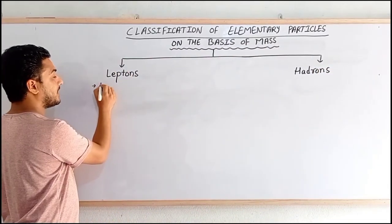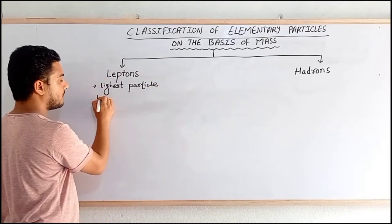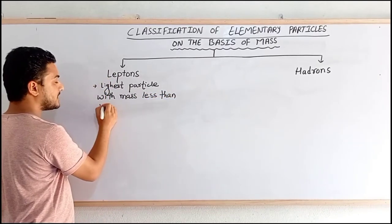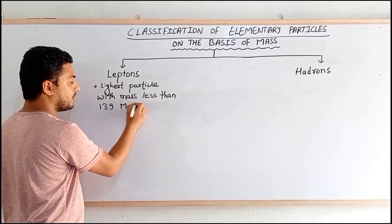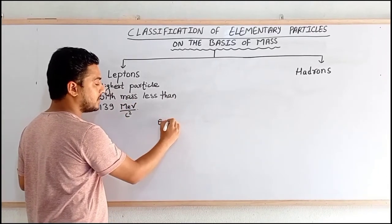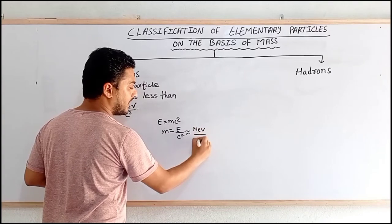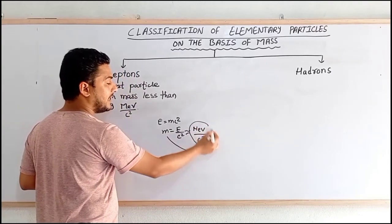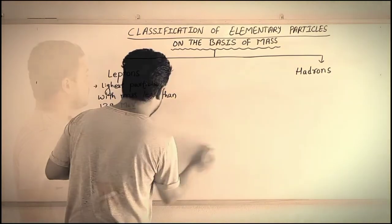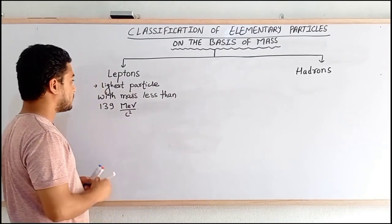Leptons are the very lightest particles with mass less than 139 mega electron volt per c-squared. Note that mega electron volt per c-squared is a unit of mass, since from E = mc², we get m = E/c², so mass can be expressed in terms of MeV/c² for such tiny elementary particles.